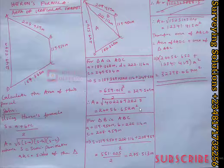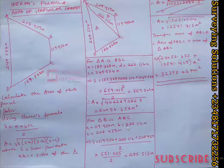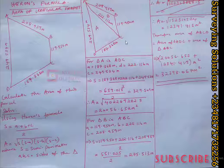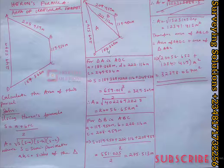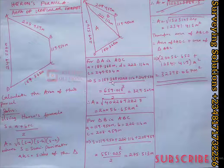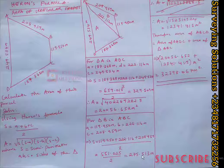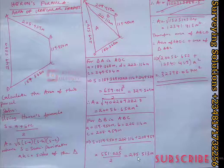Now we apply the same process for Triangle ABC. Side a (AB) = 119.550 m, side b (diagonal AC) = 222.116 m, and side c (BC) = 208.959 m. Adding all sides and dividing by two gives a semi-perimeter S = 275.513 meters.